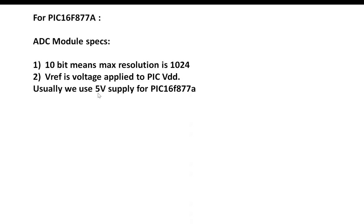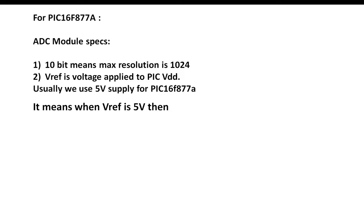If you are using a different PIC microcontroller, the only difference will be that these two values will change. For example, if you're using a PIC24 with a 14-bit ADC, then 2 to the power of 14 will be your resolution. And if you're giving 3.3 volts to the VDD pin, then your Vref will be 3.3 volts. In our case, Vref is 5 volts and the ADC resolution is 1024.